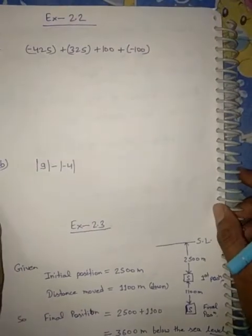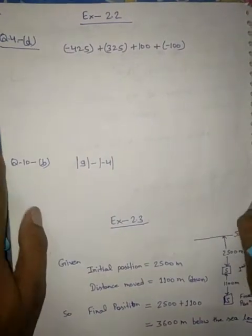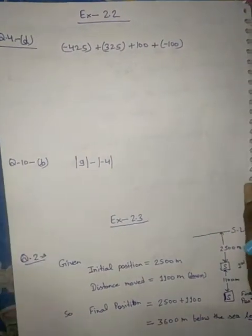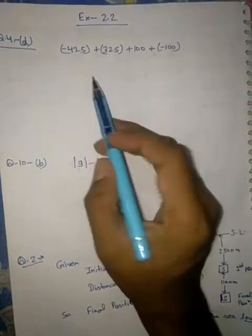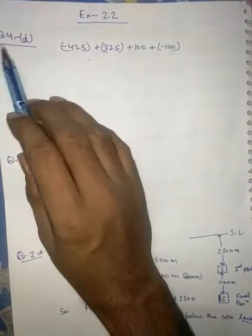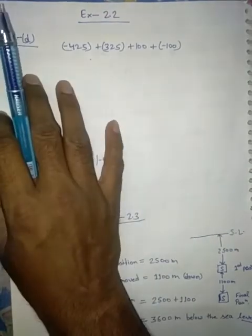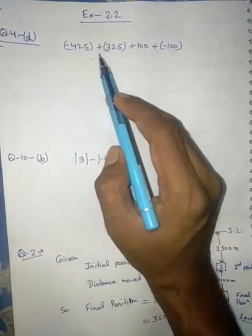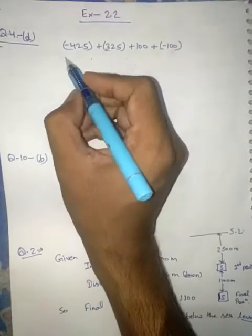Now you can see in your book exercise 2.2 — there are some questions. You can note down in your copy. Question number 4D, exercise 2.2, question number 4D. You have to solve it.